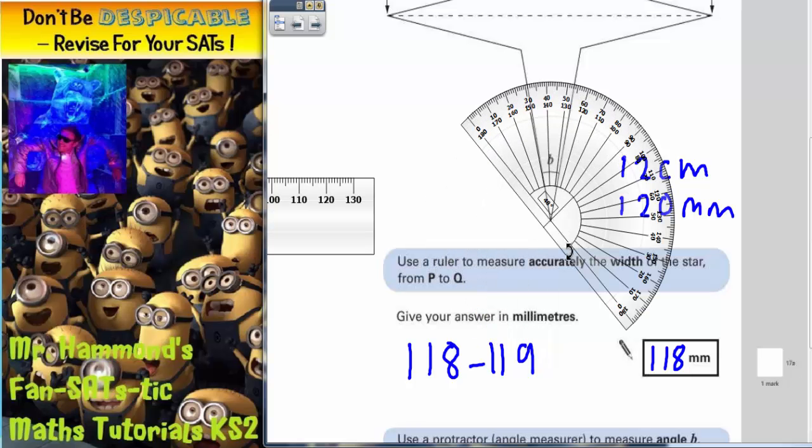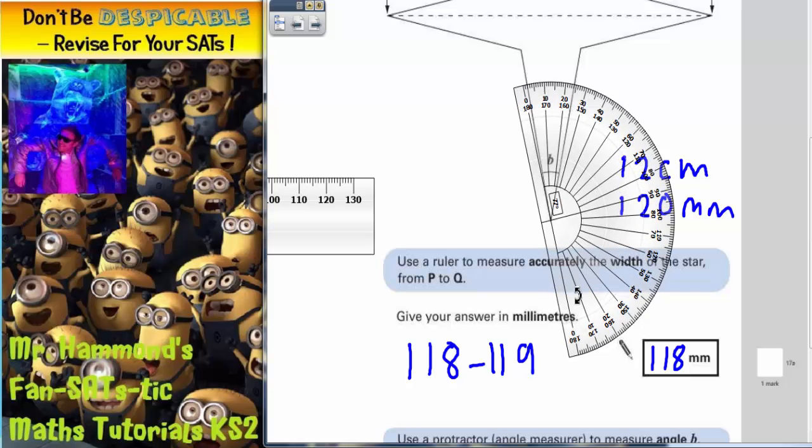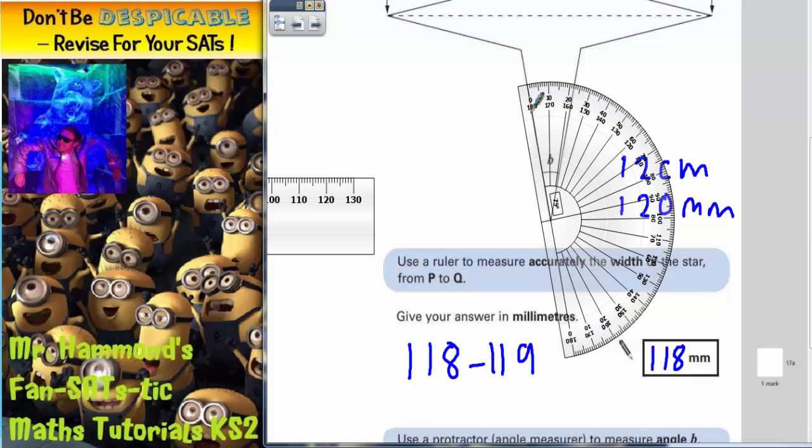Now whichever way you do it affects whether you use the inside scale or the outside scale. Now if you do it this way, the zero is on this line, so to start counting you're going to go 10, 20, 30, 40, around the outside scale.